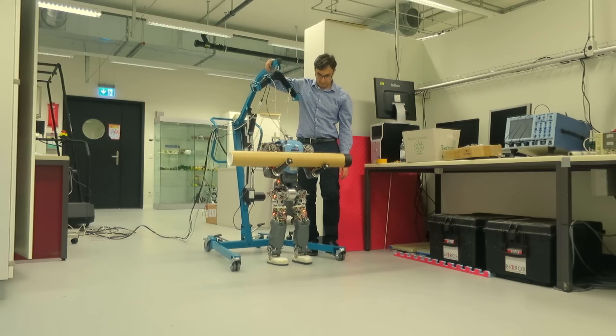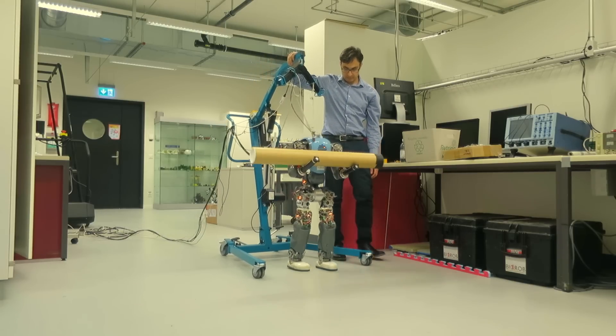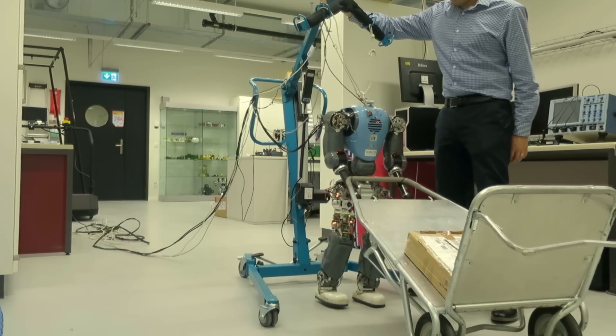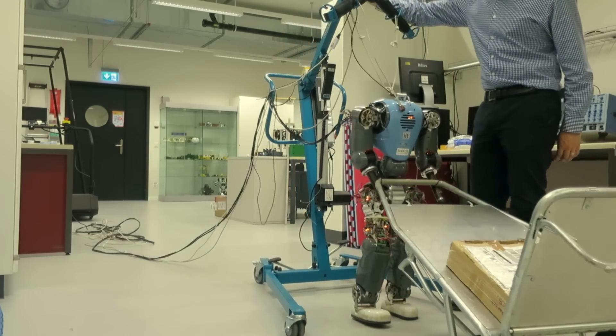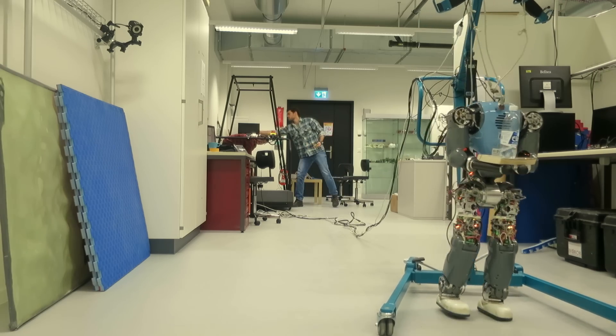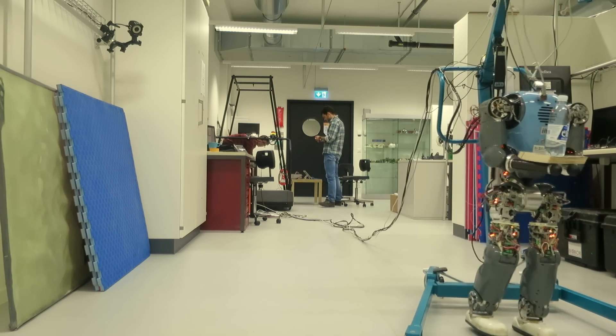The second application is the assistive scenarios, where this robot helps humans in cooperative tasks, for example, when carrying an object. Again, you have a human environment, right? And again, a humanoid design would make sense.